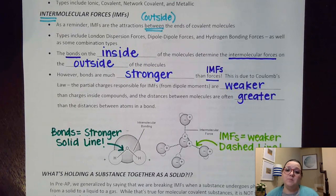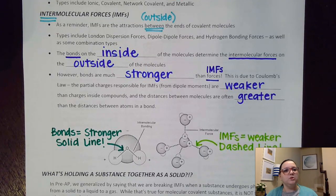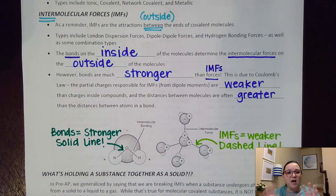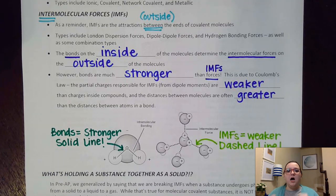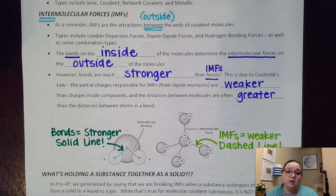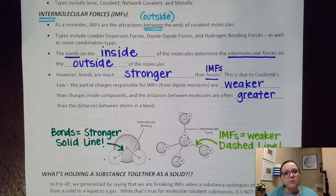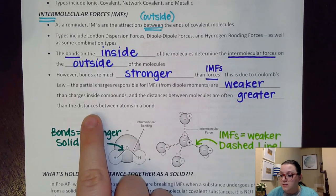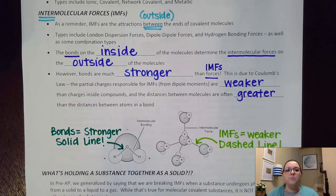The reason for that ties back to Coulomb's Law: force equals charge over distance. The partial charges responsible for IMFs from dipole moments — like a partially positive or partially negative — those charges are much weaker than a charge happening inside a compound with either shared electrons or a full ionic charge. Also, the distances between different molecules are much greater than the distances between atoms within bonds.